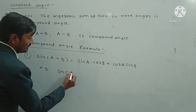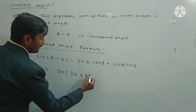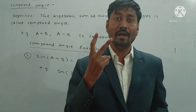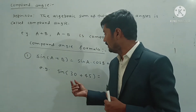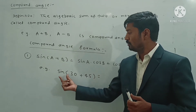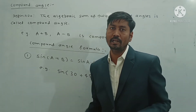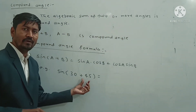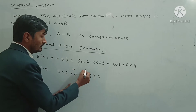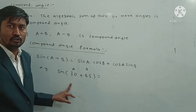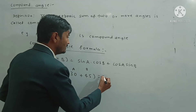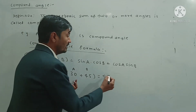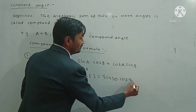For example, we have sin(30 + 45). This is the sum of two angles, 30 degrees and 45 degrees. We can assume 30 is A and 45 is B. So the expansion is: sine A means sine 30, into cos B where B means 45.